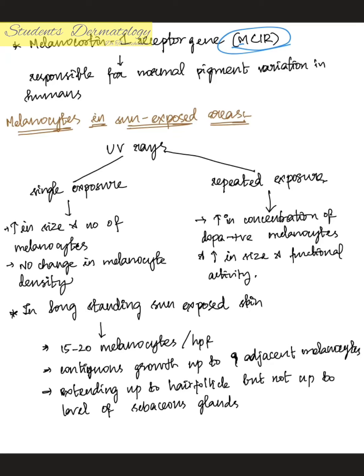In sun-exposed areas, a single UV exposure increases the size and number of melanocytes with no change in melanocyte density. During repeated UV exposure, there is an increase in the concentration of DOPA-positive melanocytes along with increase in size and functional activity, whereas a single exposure causes only an increase in size and number without any change in concentration.